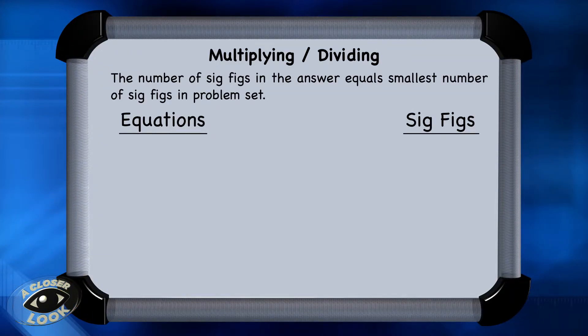Here are the rules for performing calculations with significant figures. When multiplying and dividing, look at the values that are in the problem, and whichever number has the smallest number of sig figs, that's the number of sig figs that you must use in your final answer.